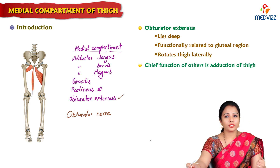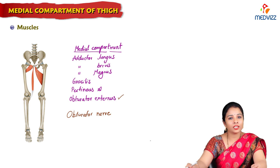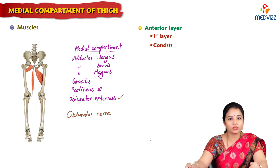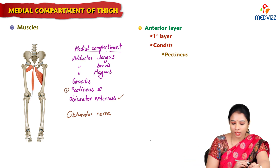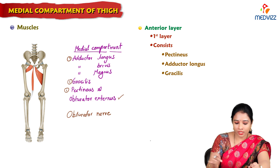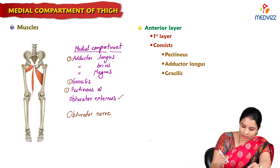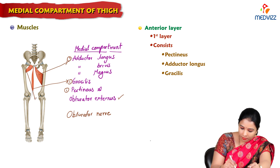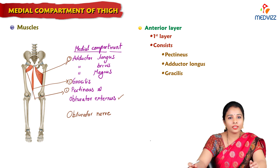The muscles of the medial compartment of the thigh are arranged in three layers. The first layer — the anterior-most layer — consists of three muscles: pectineus, adductor longus, and gracilis. We can see gracilis here, adductor longus here, and pectineus here. These three are the superficial layer, or first layer, or anterior layer.